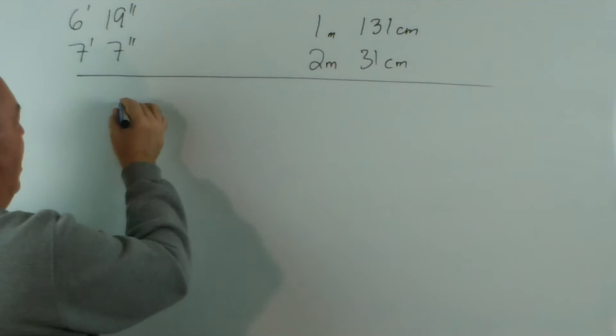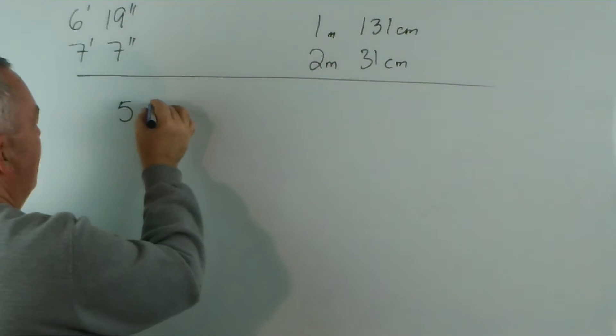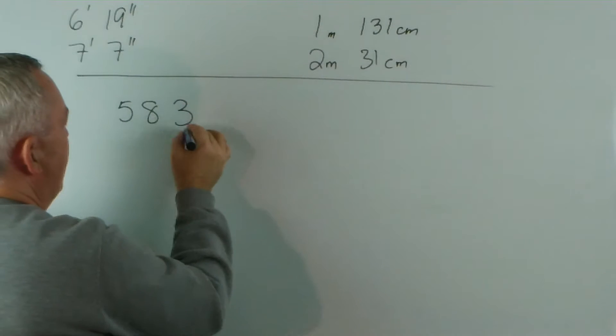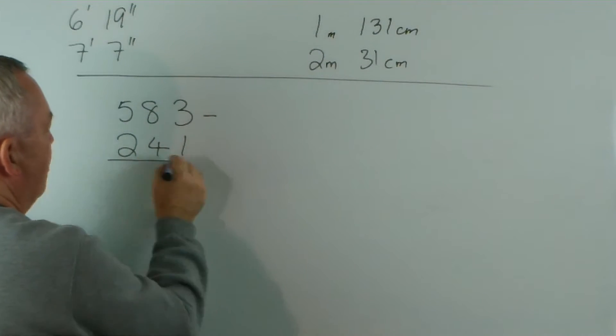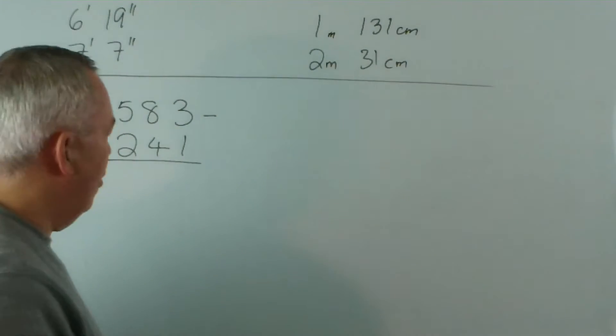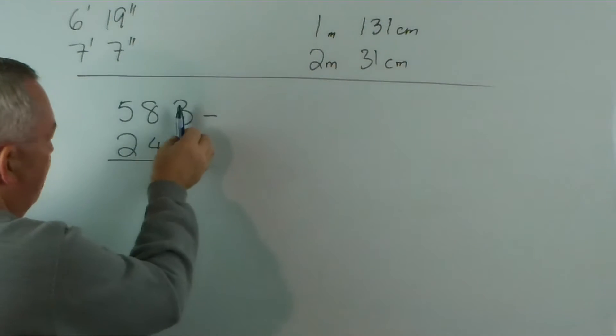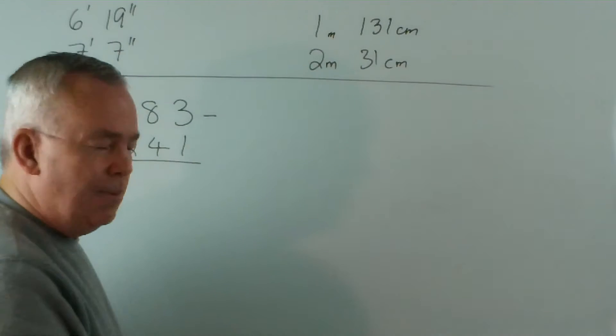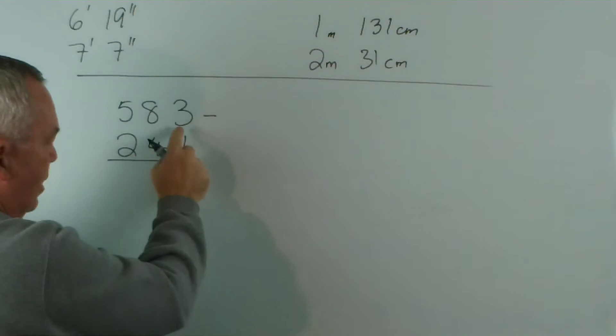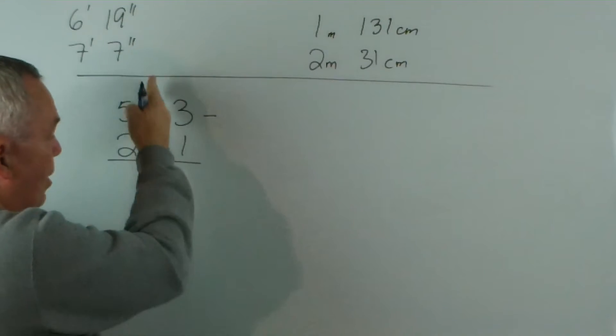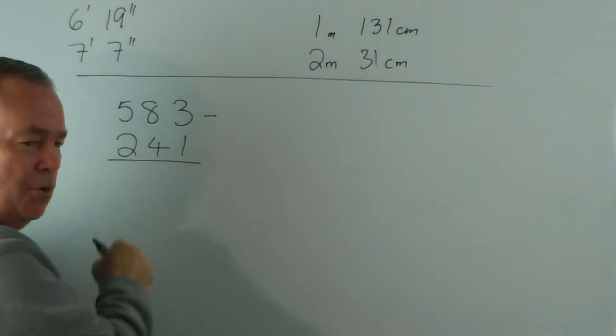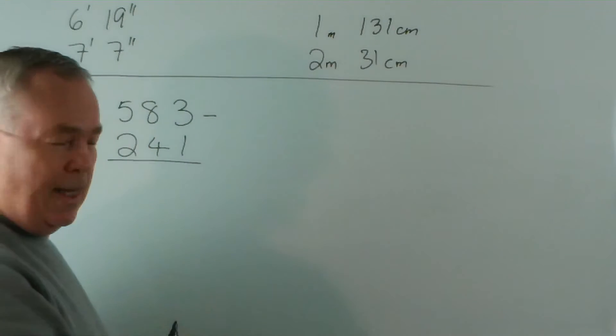If we had a simple subtraction, like 583 minus 241, we don't really suffer any problems. We have a number system where every column has a value — so this number's worth 3 and this one here's worth 1. In this column, they're worth 10 — so that's actually an 80 and that's actually worth 40 — even though it's just an 8 and a 4. And here we have the hundreds column — so that's actually worth 500 and that's worth 200.